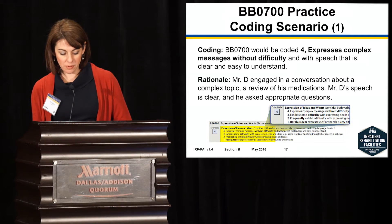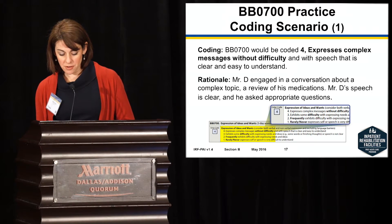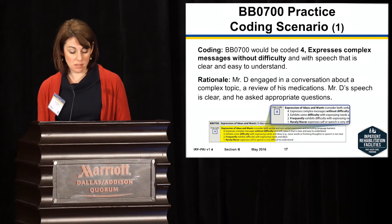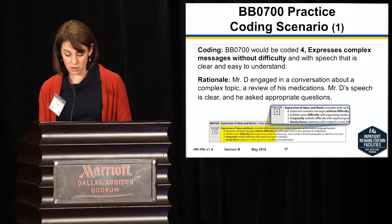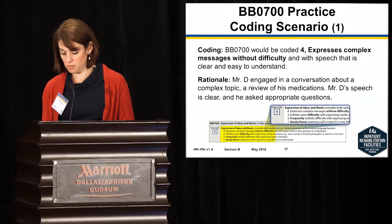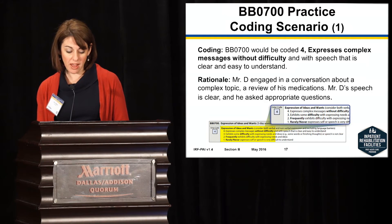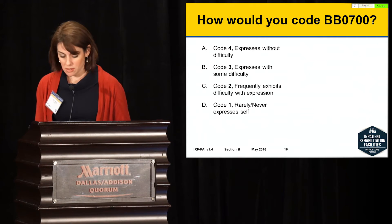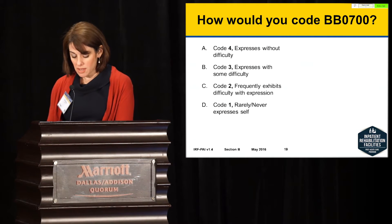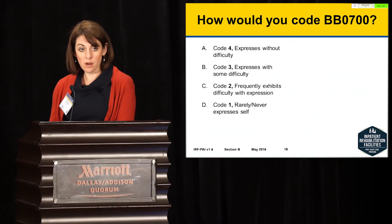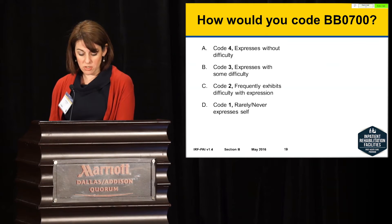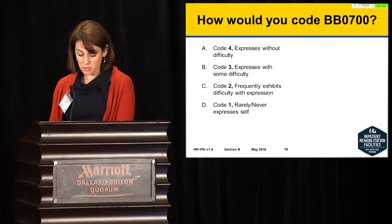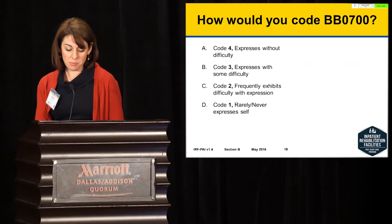Second practice scenario: Mr. P is admitted to an IRF for inpatient rehabilitation following a traumatic brain injury. When conversing with the nurse, Mr. P has difficulty sometimes finding a word, and after struggling to identify the word, will eventually compensate by using other descriptive words. Mr. P recently described coffee as 'that black hot stuff that I drink in the morning.' Would you code him a 4, 3, 2, or 1?